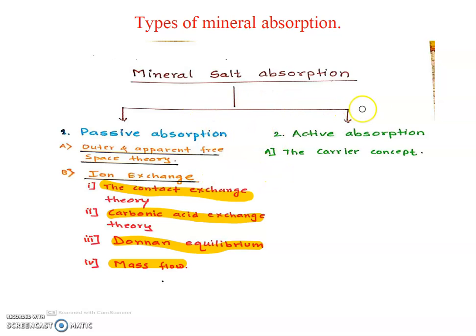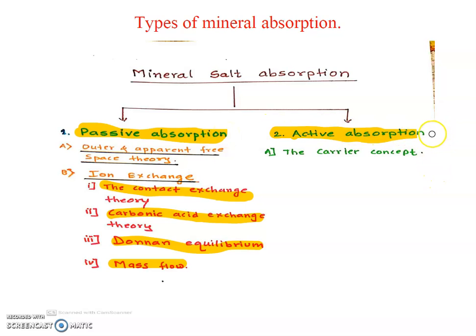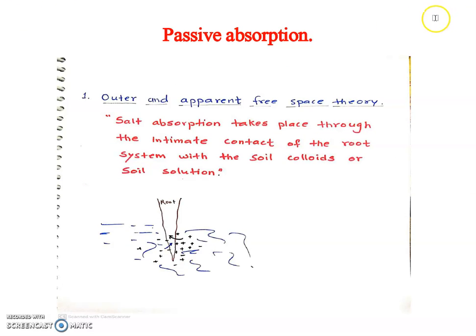In passive absorption, there is no need of energy. Passive absorption means when the absorption of mineral salt takes place without any expenditure of metabolic energy — that is, without ATP — and simply by diffusion into the plant cell. In active absorption, some energy from the plant is utilized for absorption of minerals from the soil.